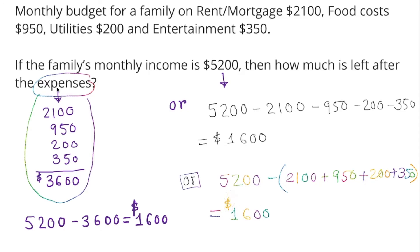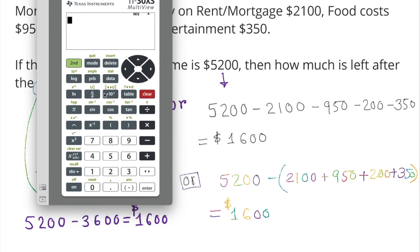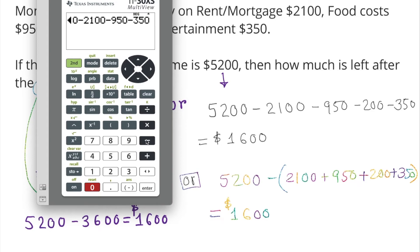So no matter which way we do it, $1600 should be left over after the expenses. We can also use a calculator to verify: 5200 minus 2100 minus 950 minus 200 gives us the same answer.